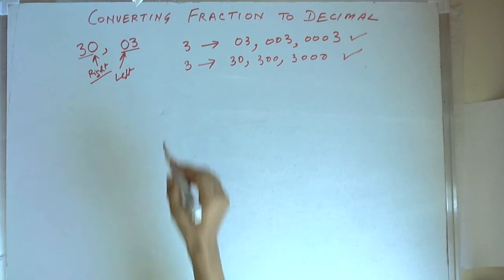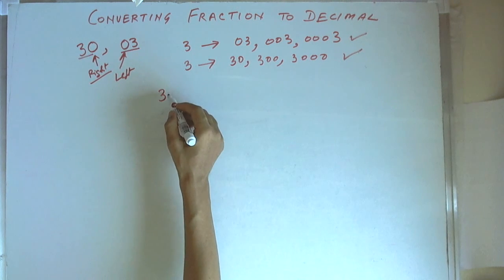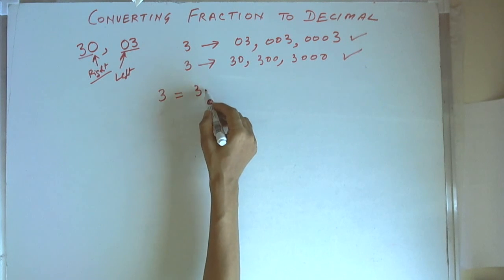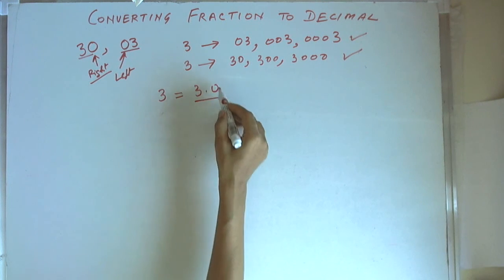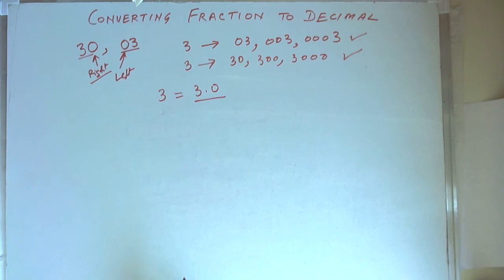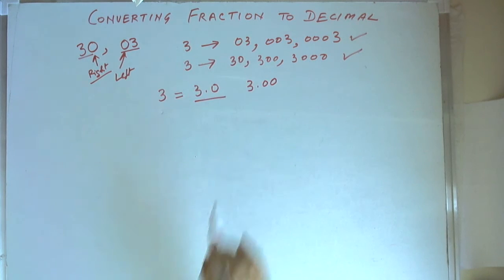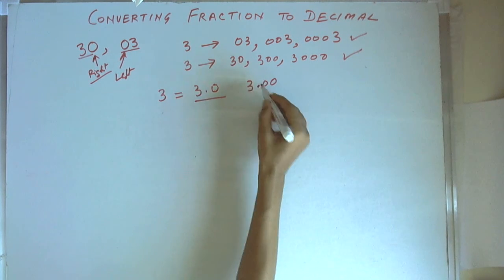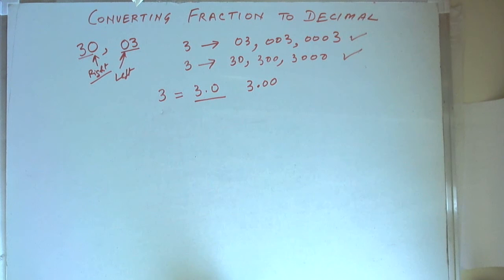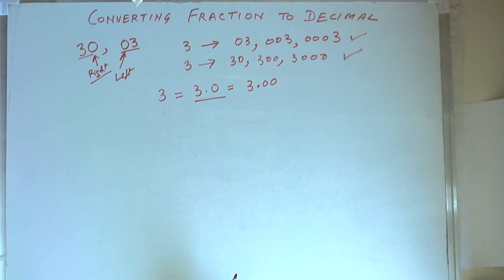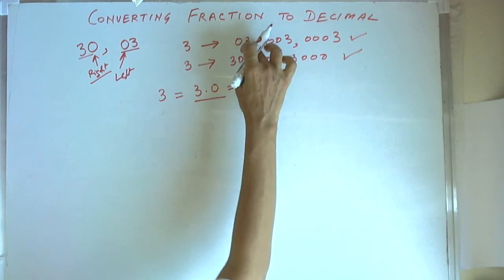Similarly, when it comes to decimal, say for example, we have 3. What we can do is write 3.0. So 3 can be written as 3.0. Similarly, this can also be written as 3.00. Now if there is a decimal and you are putting 0 on the right hand side, then it does not make a difference. So 3 is equal to 3.0 and is also equal to 3.00.